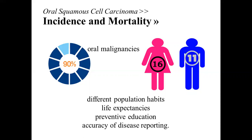As far as I know, Japan has the oldest living individual, so their life expectancy is higher compared to the Philippines, which averages around 60 to 70 years. It will also depend on preventive education as governed by the government, and lastly on the accuracy of disease reporting, since some cases are not reported — particularly in the most rural areas of the Philippines where patients may never see a doctor or dentist.